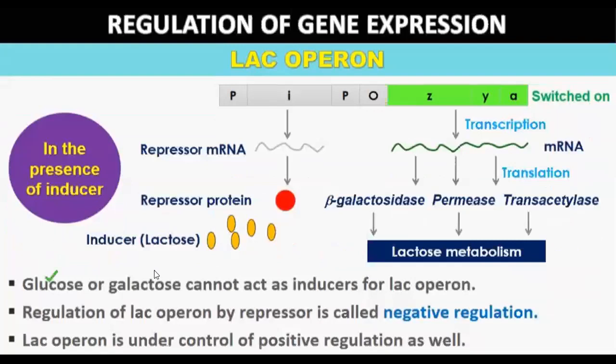Glucose and galactose cannot act as inducers for the lac operon. Regulation of the lac operon by the repressor is called negative regulation. The lac operon is also under the control of positive regulation as well.